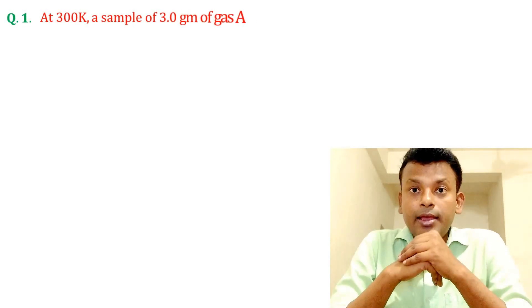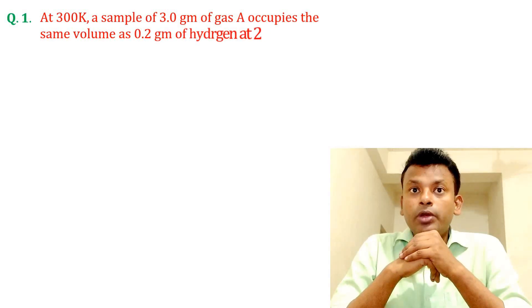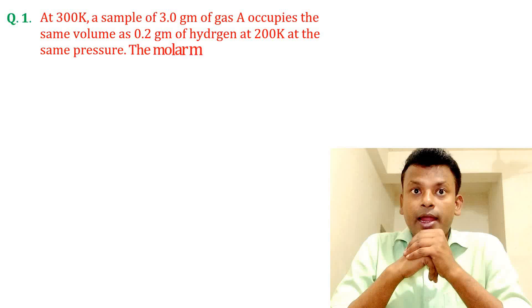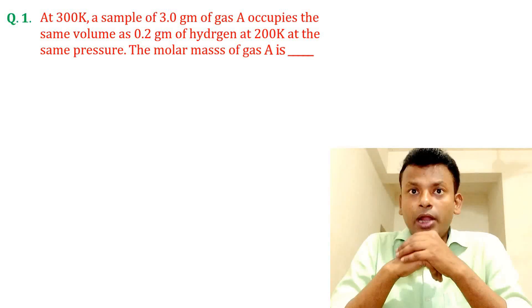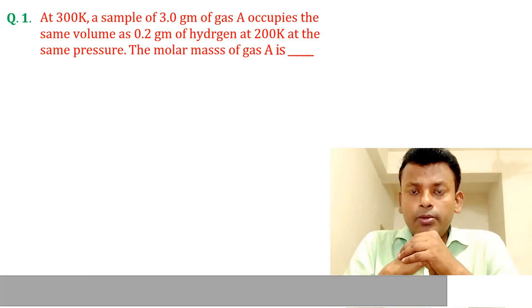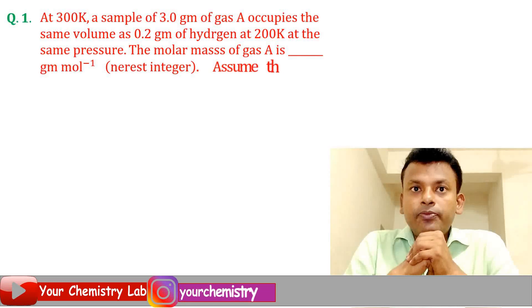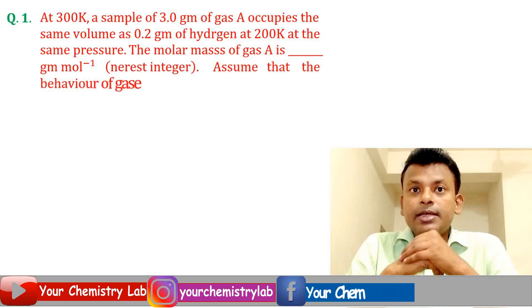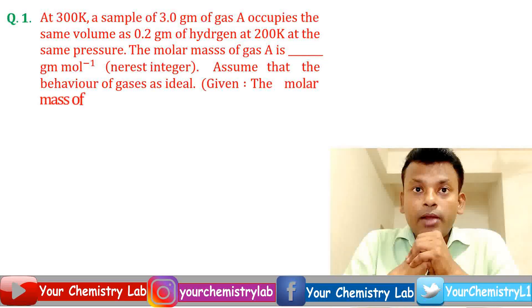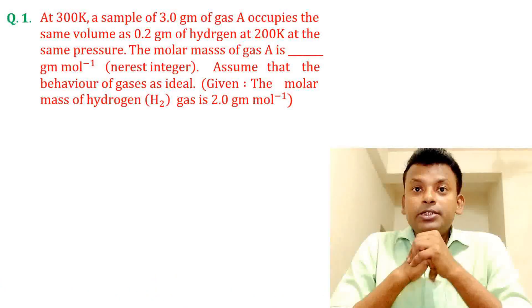Question 1. At 300 Kelvin, a sample of 3 grams of gas A occupies the same volume as 0.2 grams of hydrogen at 200 Kelvin at the same pressure. The molar mass of gas A is dash grams per mole (nearest integer). Assume the behavior of gases as ideal. Given molar mass of hydrogen gas is 2.0 grams per mole.